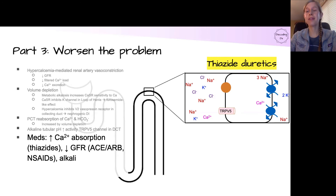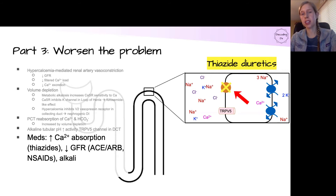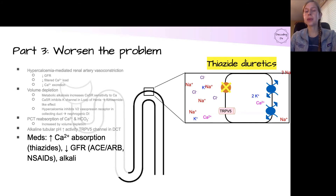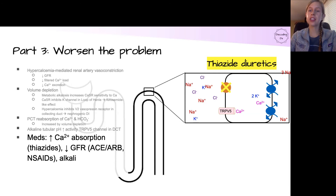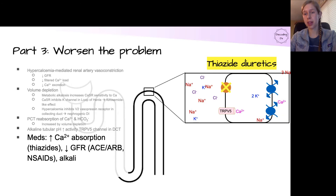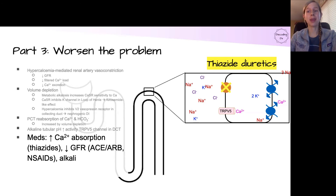Finally, medications can further exacerbate the problem if your patient is taking them. In the case of thiazides, they block the sodium-chloride cotransporter in the distal convoluted tubule, but the sodium-potassium pump is still functioning — so it's still creating a negative electrical gradient inside the cell, which attracts calcium through the calcium channel, and the concentration gradient favors the sodium-calcium channel to pull in even more calcium into the body. On top of this, the diuretic effect of the thiazide will worsen the volume contraction, which then causes more calcium and bicarbonate reabsorption in the proximal convoluted tubule.